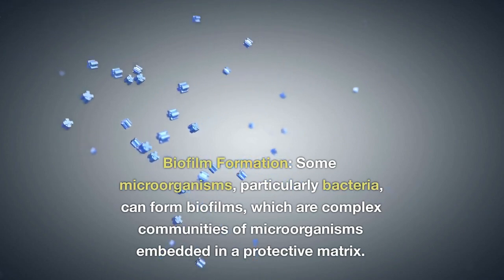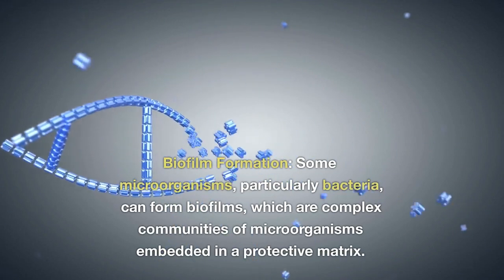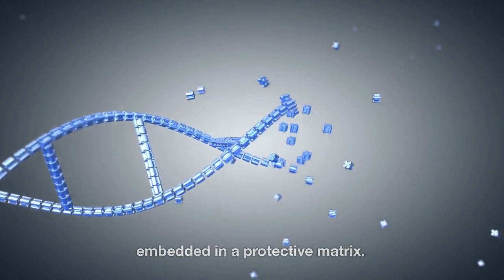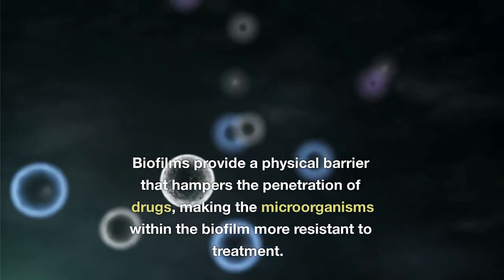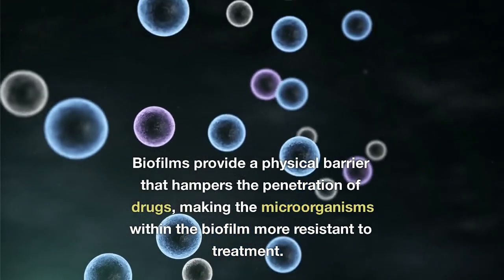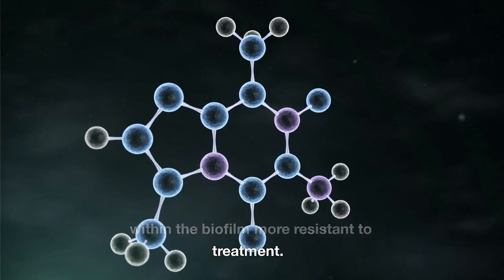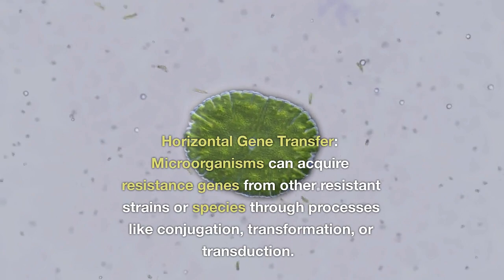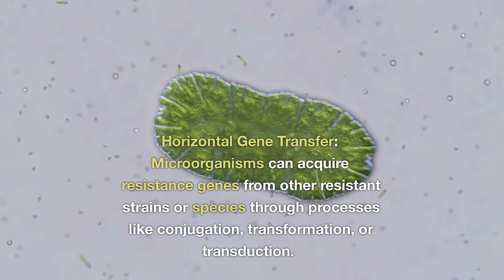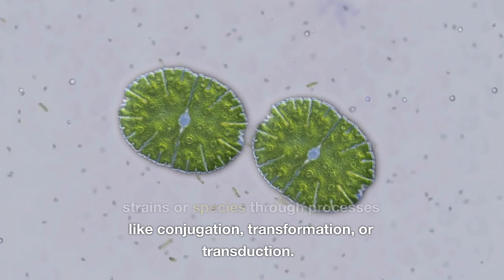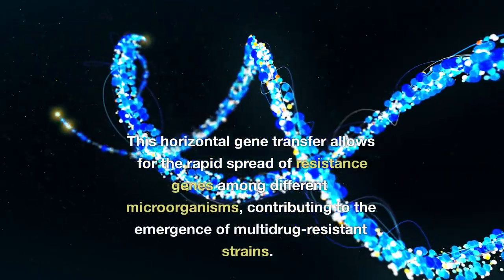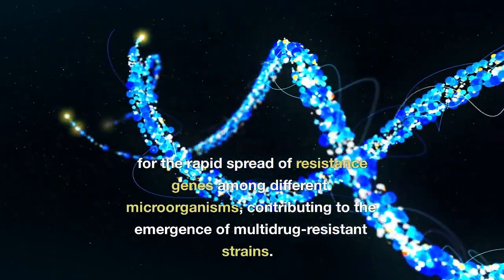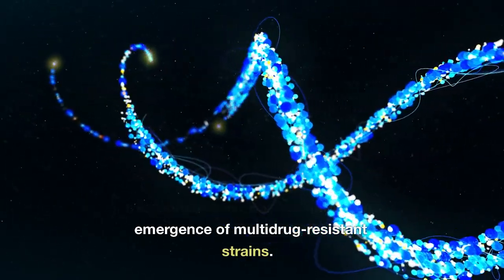Biofilm formation is another resistance mechanism. Some microorganisms, particularly bacteria, can form biofilms — complex communities of microorganisms embedded in a protective matrix — that provide a physical barrier hampering drug penetration, making microorganisms within more resistant to treatment. Finally, horizontal gene transfer allows microorganisms to acquire resistance genes from other resistant strains or species through processes like conjugation, transformation, or transduction, enabling the rapid spread of resistance genes and contributing to the emergence of multidrug-resistant strains.